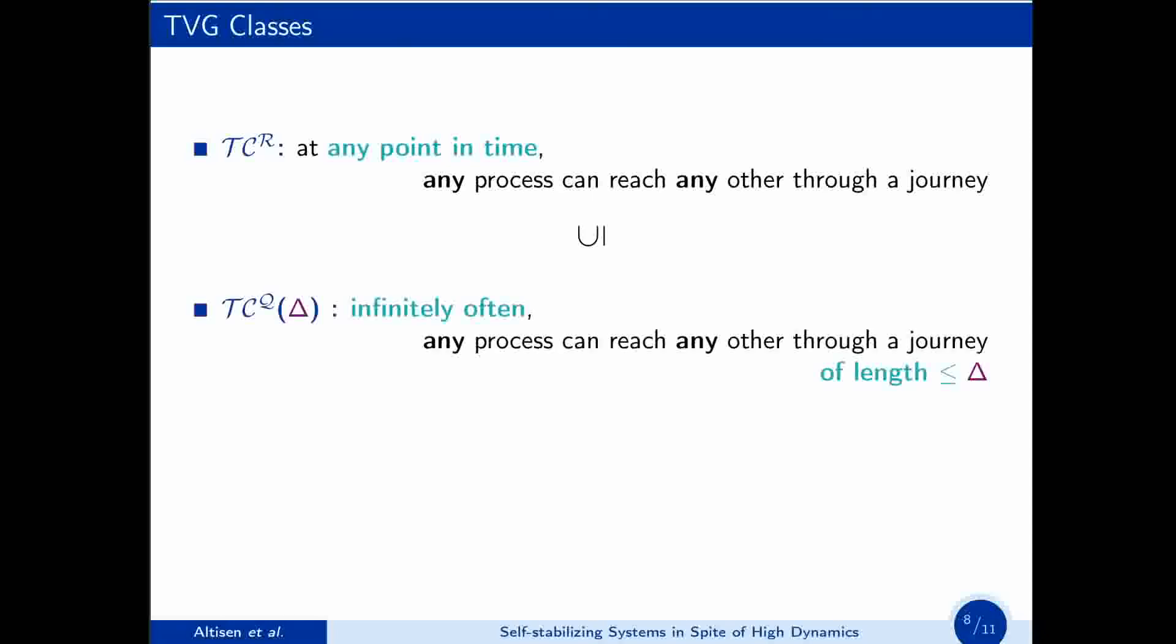The second class is a subclass of TCR, called TCQ-delta. In this class, infinitely often, any process can reach any other through a journey, whose length is bounded by the parameter delta. Finally, the third class is included in TCQ-delta. TCB-delta is similar to TCQ-delta, except that the journey of length at most delta exists at any point in time, and not only infinitely often. In other words, in TCB-delta, the temporal diameter of the network is bounded by delta.